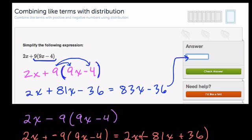So now you have 2x minus 81x, that's negative 79x, and then plus 36, and you're basically done. Now here, the last thing could be,